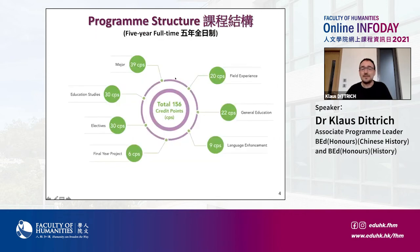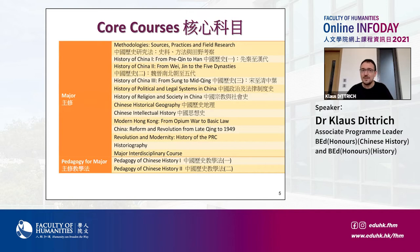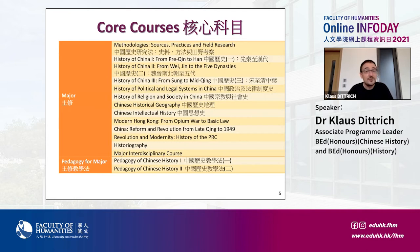The program structure is quite similar to the B.Ed. History, with major courses, education studies courses, electives, field experience, general education, language enhancement components, and a final year project. For the major core courses in Chinese history, we start with courses on methodology and then basically follow Chinese history chronologically from ancient times through to the 21st century.